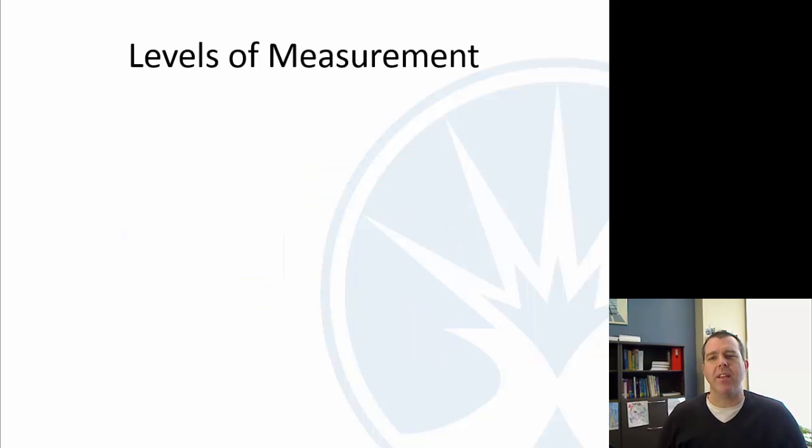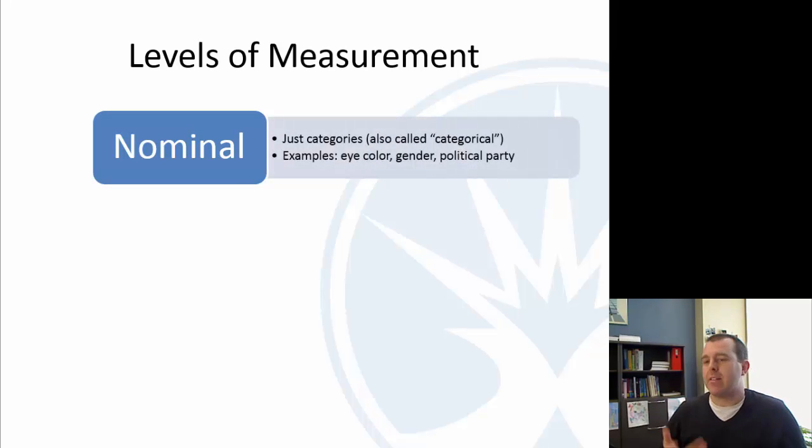Kind of related to this, we have levels of measurement, kind of with precision here. So a nominal level of measurement, what we say nominal is just a category. So I've got some examples there. Eye color, gender, political party. That's nominal. That's just categories. There's not any ranking. They're just different categories.